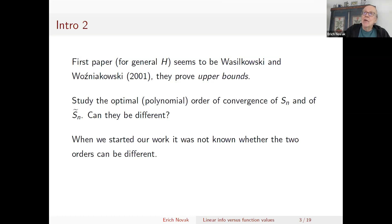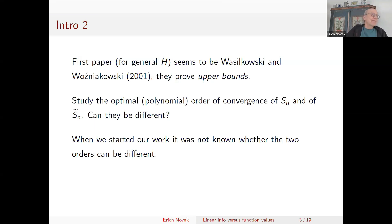Of course one should stress that for specific spaces like Sobolev spaces there are many earlier results. But this general question — to compare lambda_all (linear information) with lambda_standard (function values) — was studied 20 years ago. When we looked into the literature it was difficult to find examples where standard information is really worse compared to lambda_all. When we started our work, it was not known whether the two orders of convergence can really be different, and this was our problem: to find a bad example for function values.